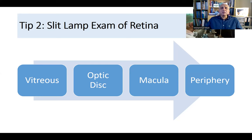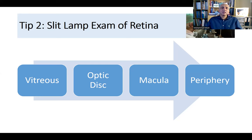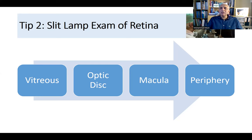New vessels in proliferative diabetic retinopathy are mostly present outside the vascular arcades — nasal to the disc, on the disc, superior and inferior to blood vessels, and about two disc diameters temporal to the fovea. Always ask the patient to look up and down, and especially ask them to look down in a diabetic patient, as there may be a small vitreous hemorrhage inferiorly that you could miss.